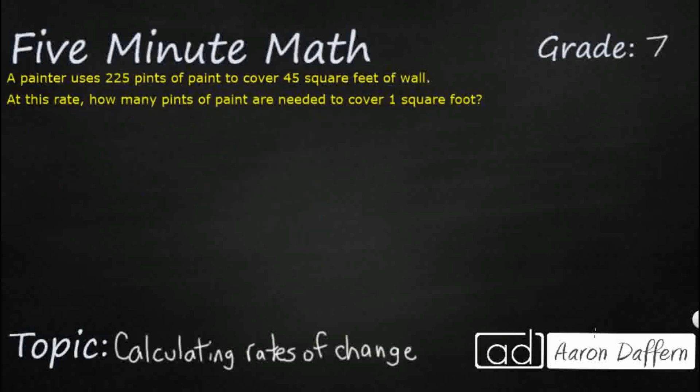In our next example, we have a painter using 225 pints of paint to cover 45 square feet. And we have a rate here, constant rate. We need to find how many pints a painter needed to cover just that one square foot. So we're looking at that base rate.